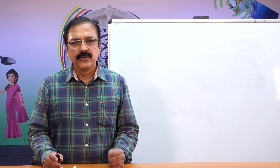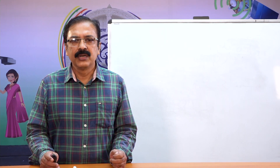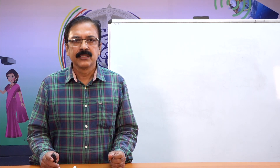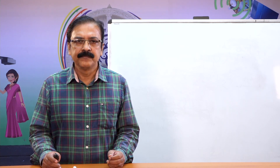When we study geometry further, we will not use all these arrowheads or bars. We will denote the line segment AB, ray AB, and length of line AB all simply as AB without any mark, because the context will make it understood whether we are dealing with a line, a line segment, a ray, or the length of AB.